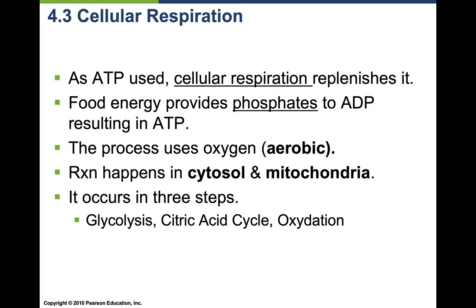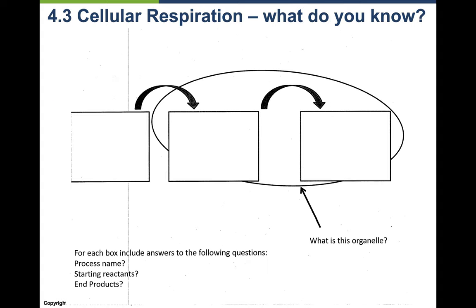This reaction takes place in the cytosol and the mitochondria, and it occurs in three steps: glycolysis, the citric acid cycle, and oxidation. Take a moment to sketch this out and answer: what organelle is involved, what is the process in each step, and what are the starting reactants and end products? Hit pause and work that out.